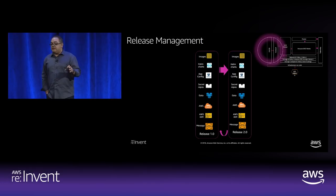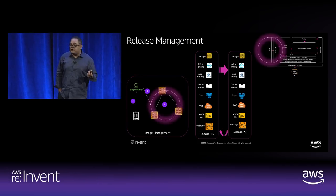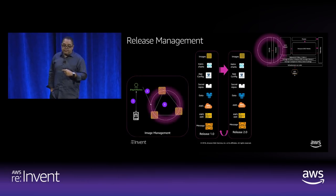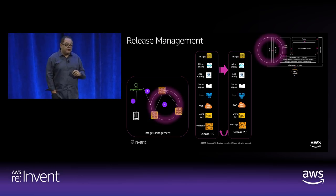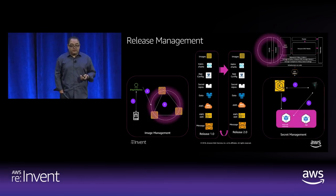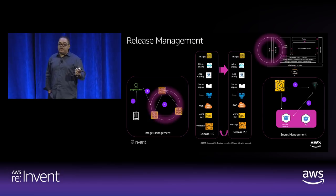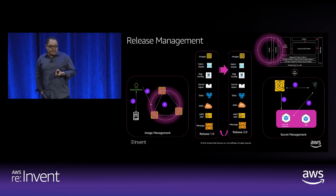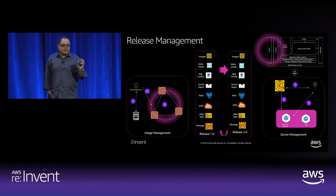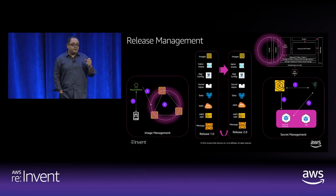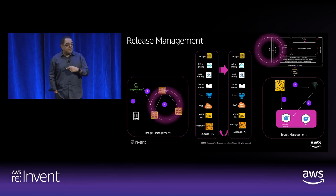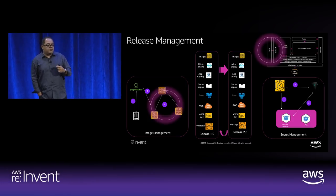Two key engineering processes: first, image promotion — we're working with the AWS ECR team to build a standardization around promoting images across all ECRs so the same images are available across all regions. Right now we're doing that manually. Second, we work with HashiCorp Vault for secret management. We have our own init container — when a new pod comes that requires a secret, an init container starts first, syndicates to Vault, grabs the token, integrates it into the application container, which then grabs the secret and runs. This is the kind of process you want to invest in.